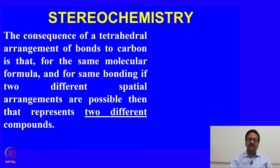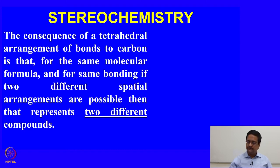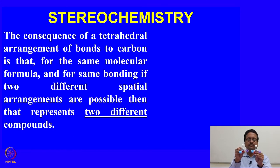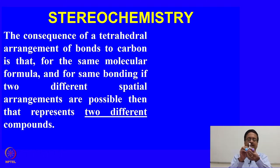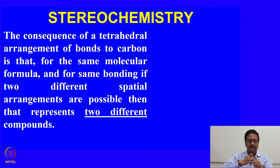The consequence of the tetrahedral arrangement of bonds of carbon is that for the same molecular formula and for the same bonding, if two different spatial arrangements are possible, then those two different orientations are two different compounds. For example, I have two molecules formed by four different groups. These two molecules are the same because they can be superimposed on one another. But if I do a replacement of one pair of bonds and connect them in a different way, then these two molecules will be different.